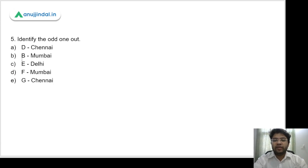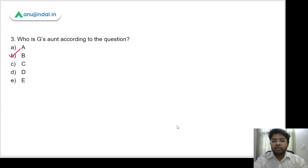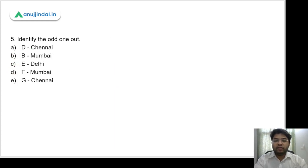Question 5: Identify the odd one out from: D–Chennai, B–Mumbai, E–Delhi, F–Mumbai, G–Chennai. D–Chennai is correct. B–Mumbai is correct. E–Delhi is correct. F–Mumbai is correct. But G–Chennai is wrong — G should be in Delhi. So G–Chennai is the odd one out, and the correct answer is option C.